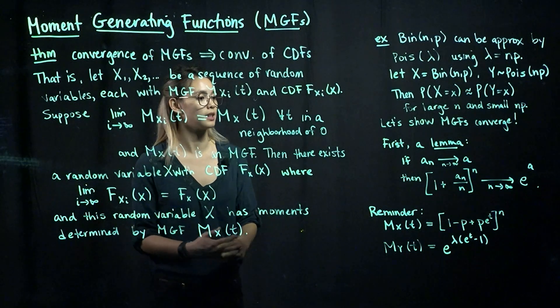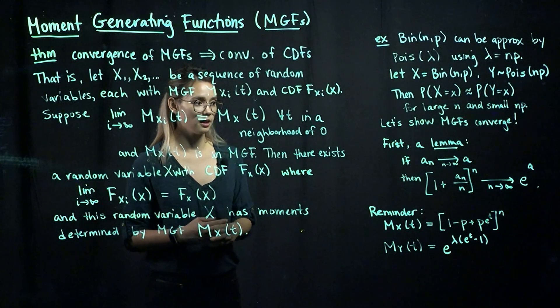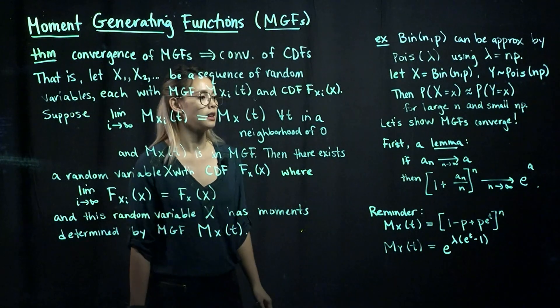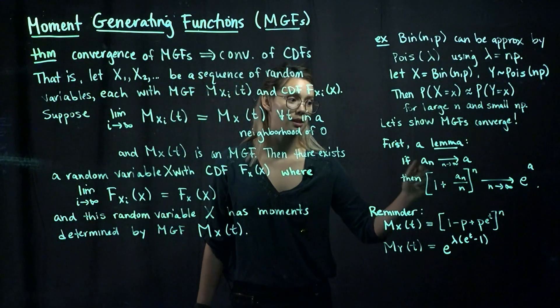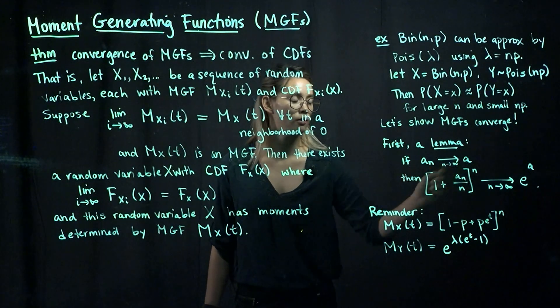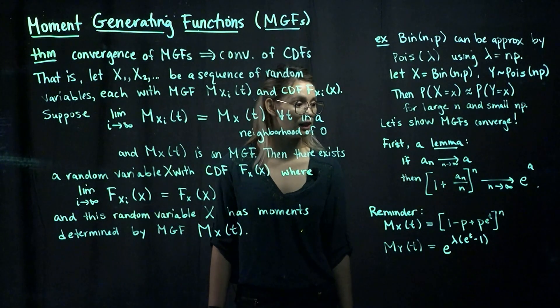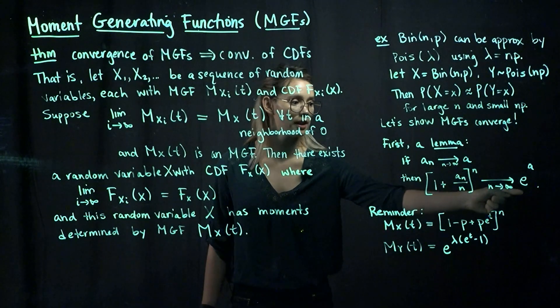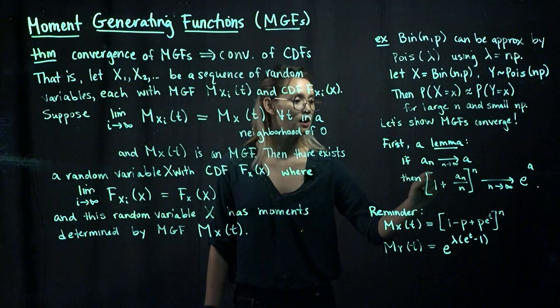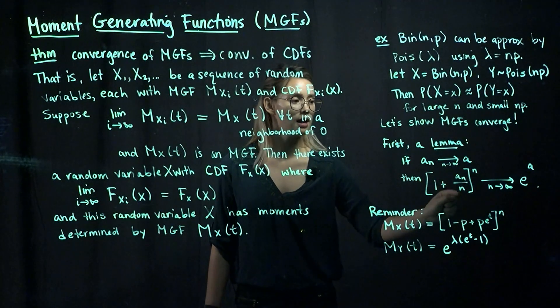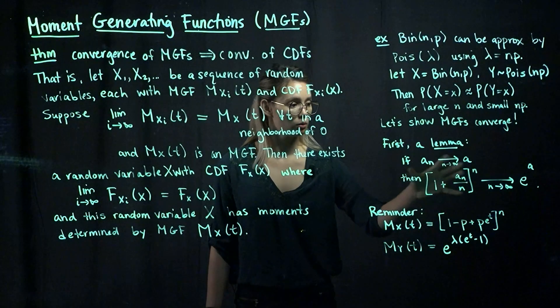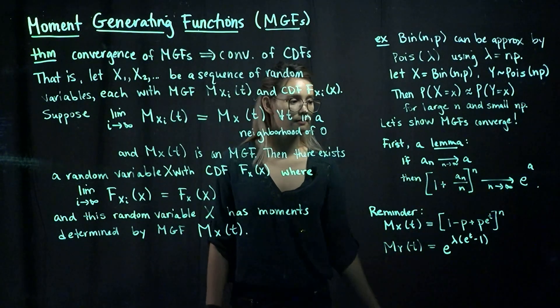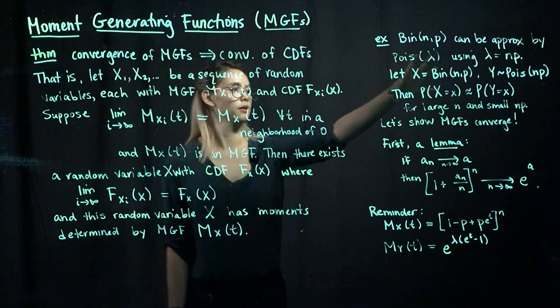In order to do this, we're going to need to set up a couple things. First thing is a lemma. Let an be some sequence. If an converges to value a as n goes to infinity, then this quantity will converge to this. So this quantity here is 1 plus an over n, all raised to the nth power. This will converge as n goes to infinity to e to the a. We'll use that theorem when we prove this here.